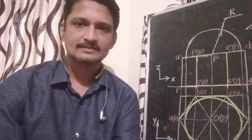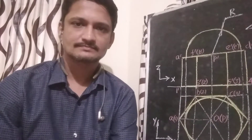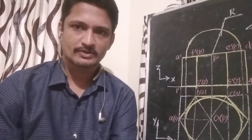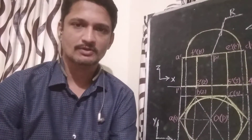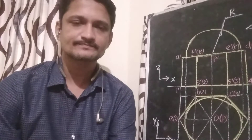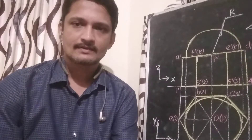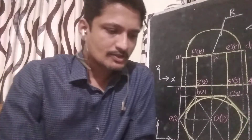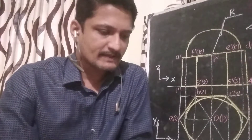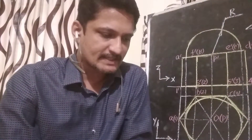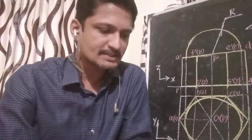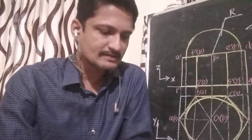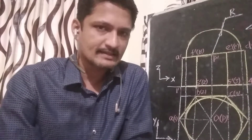Good morning. Now our class is isometric projection of combination of solids. The question is: draw the isometric projection of a hexagonal prism with a hemispherical top touching all the sides. The sides of the hexagonal prism are each 6 cm and height 6 cm.